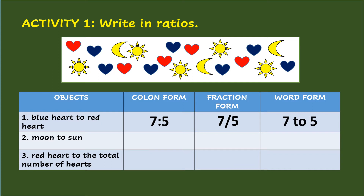Number 2: Moon to sun. There are 3 moons and 5 suns, so the ratio in colon form is 3 is to 5. In fraction, it is 3/5. And in word form, it is 3 to 5.